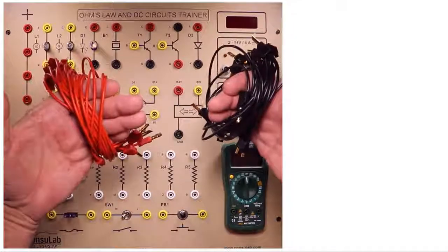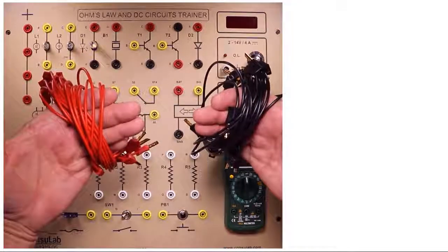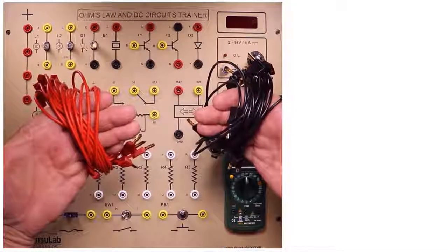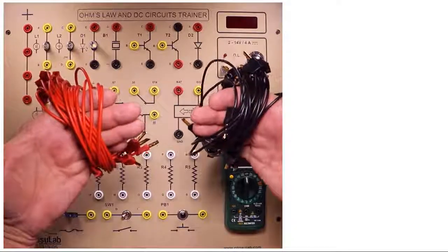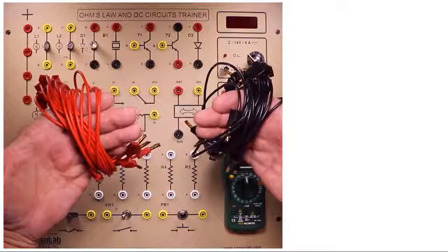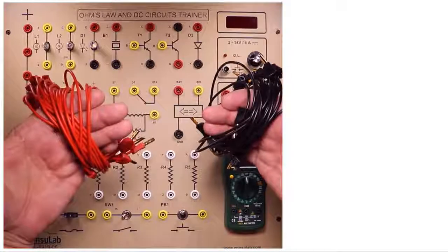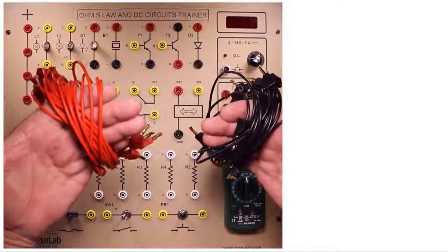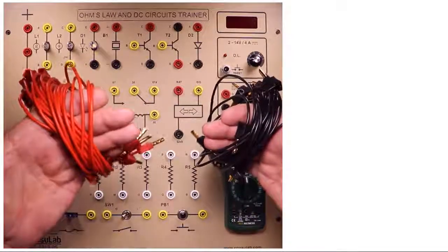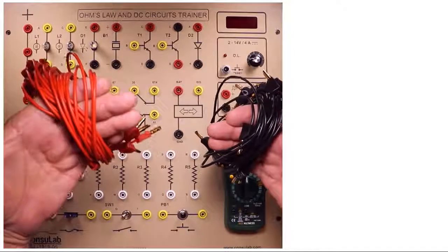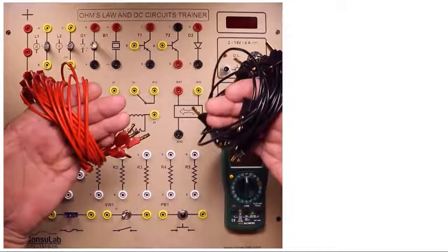For conductors on the trainer board we'll be using these red and black patch cords. Obviously an electron doesn't know what color insulation so it doesn't really matter but we'll typically use the red on anything that's the power side of the circuit and the black on anything that's the ground side of the circuit.